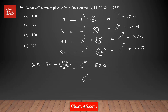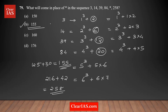Let's cross-check: 6³ + 6×7 = 216 + 42 = 258. Yes, that's correct, so this confirms our answer. Option B, 155, is the right answer.